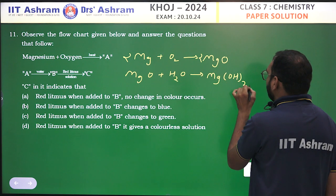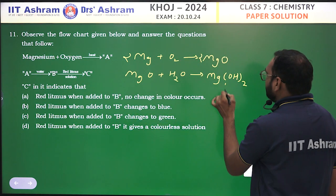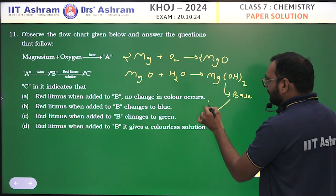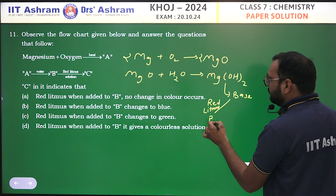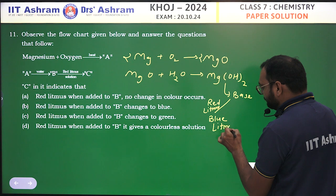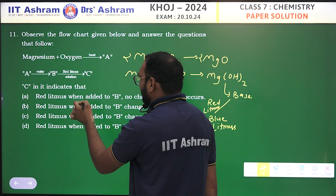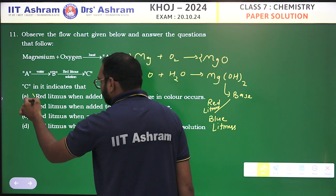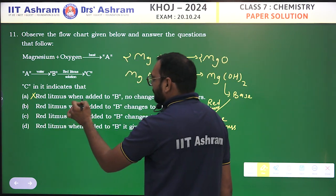Mg(OH)₂ with red litmus solution gives C. Mg(OH)₂ is a base, and bases change red litmus to blue color. Now let's see the options. Option: red litmus when added to B, no change in color occurs — that option is wrong. Red litmus when added to B changes to blue — that is option B.